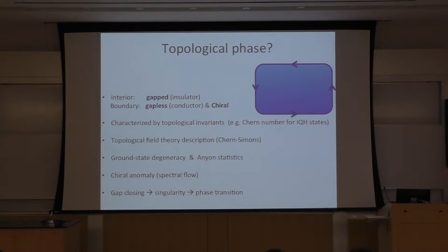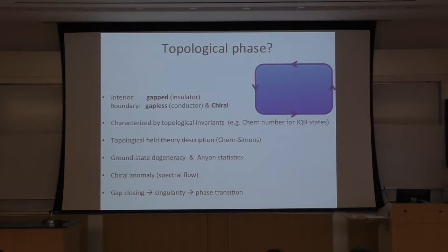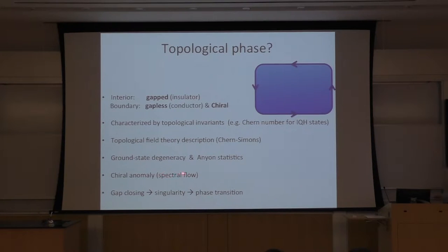For example, if you put it on a torus, the ground state degeneracy is more than one. And the system shows the so-called chiral anomaly at the edge, which means electron number is not conserved at the edge — so edge and bulk exchange particles. And it's very related to the spectral flow. The system is robust as long as there is no gap-closing.